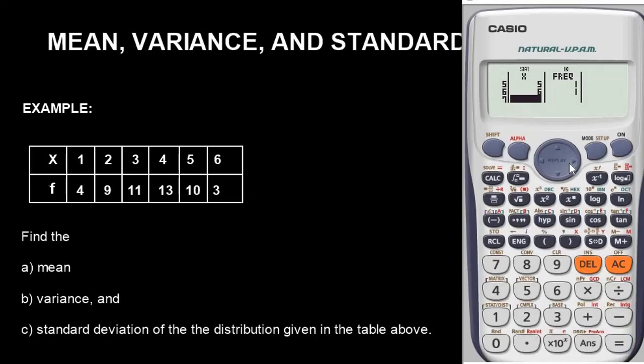Okay, let's go back to the frequency table now and input the values. So there we have 4, 9, 9, 11, 11, 13, 10, 10, and 3. Very simple. So we are done.